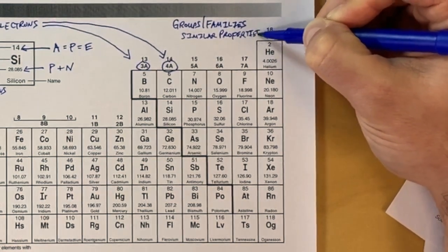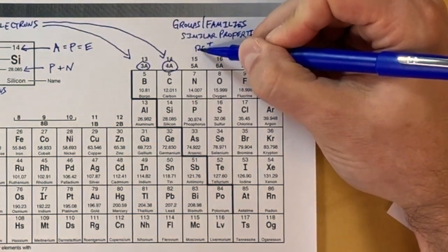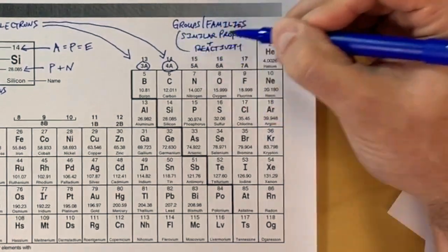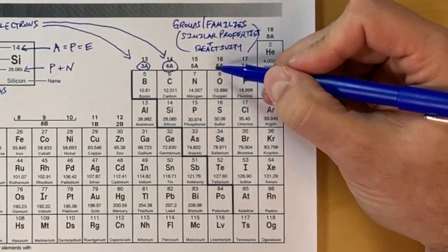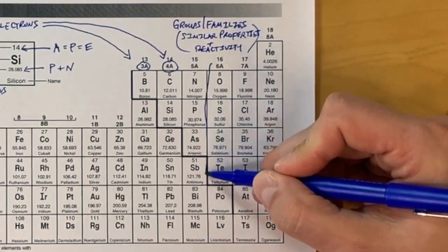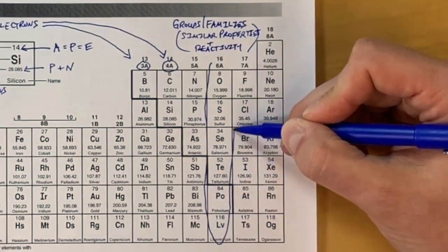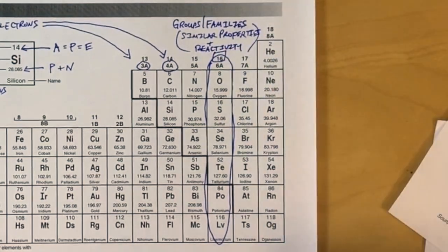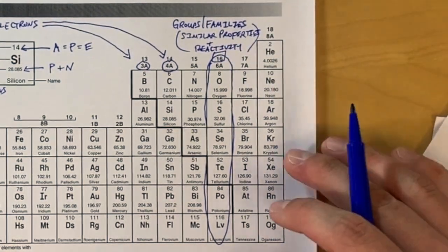They also have the same number of valence electrons. So every element within the group has the same number of valence electrons. Therefore, they also have the same reactivity. If we look at group 16 here, all of the elements will have the same number of valence electrons and reactivity and similar properties.